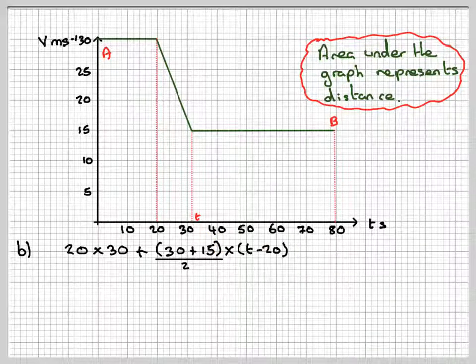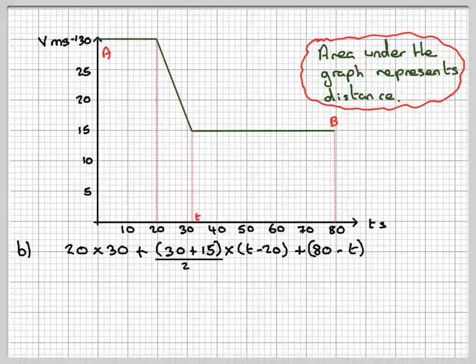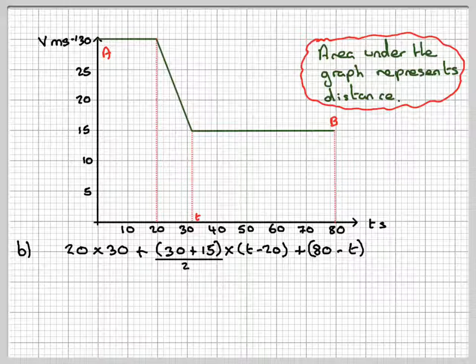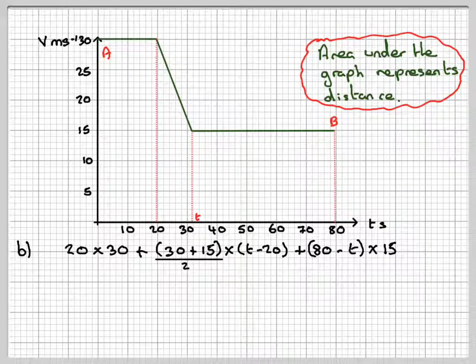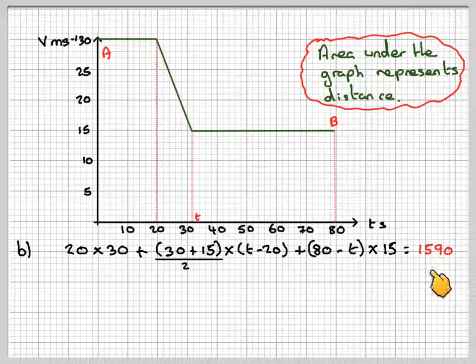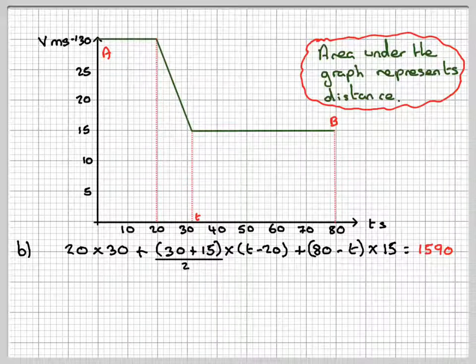That's going to be 80 minus whatever T is times the height here which is 15. And we know that that area is equal to 1590 that was given in the question.